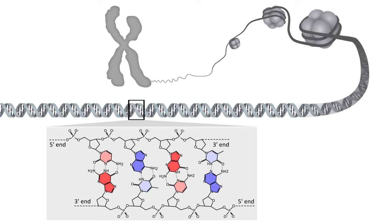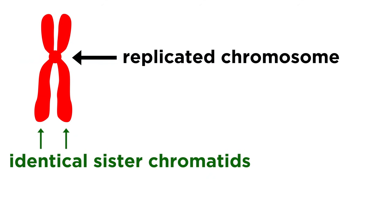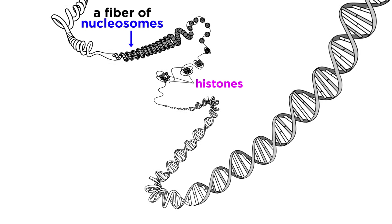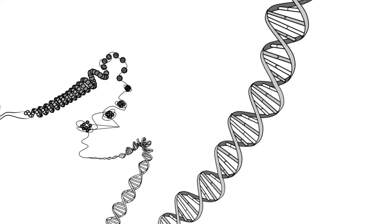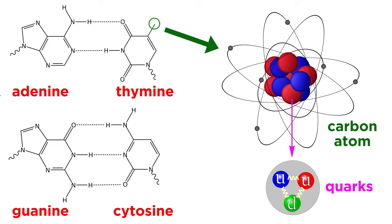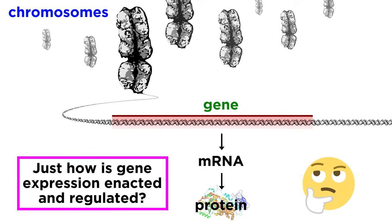So now we should finally be able to look at a picture of a chromosome and see all the tiers of structure within, by connecting concepts from biology, biochemistry, and chemistry. This huge structure — a replicated chromosome consisting of two sister chromatids — is made of looped domains wrapped around a scaffold. These looped domains can be unwound to reveal a fiber of nucleosomes, which result when DNA wraps around histones to form tiny beads. We can even zoom in on DNA to reveal its double helical form, the structure of the nitrogenous bases that dictate base pairing, all the way down to individual atoms and beyond. This huge structure contains genes that, when expressed, produce all of the proteins in your body. So how does gene expression work, and how is it regulated? Let's move forward and learn about this next.